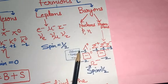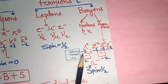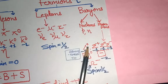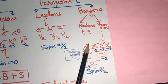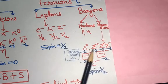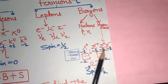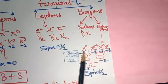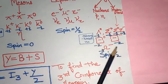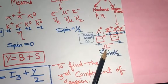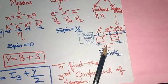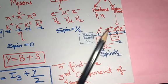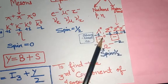The strangeness number for most particles is zero. Lambda-naught has strangeness number −1. Sigma — all sigma multiplicities are 3 — also has strangeness number −1. Xi has strangeness number −2, and omega has strangeness number −3. I have mentioned the strangeness numbers for all the hyperons clearly with the blue pen.